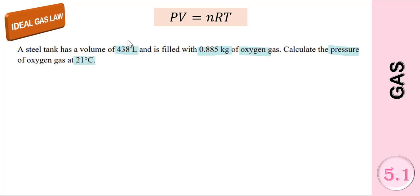Let's label our information in the question. We have a volume, mass of oxygen gas, and the question asks you to find the pressure of the oxygen gas. And then we have the temperature.